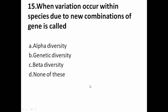When variation occurs within a species due to new combinations of genes, it is called: A is alpha diversity, B is genetic diversity, C is beta diversity, D is none of these. Since it is variation within a species due to genes, it is called genetic diversity. So B — genetic diversity — is the correct answer.